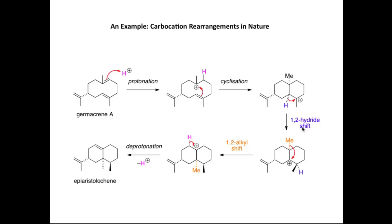Next, a 1,2-hydride shift occurs. The hydrogen on the neighbouring carbon moves to the electron-deficient carbon, taking its electron density with it. We form a new carbon-hydrogen bond, and the positive charge moves from one carbon to the neighbouring carbon, giving another tertiary carbocation. Then a similar process occurs with the adjacent methyl group: electron density from the carbon-carbon bond is donated towards the positive charge, we form a new carbon-carbon bond, and the positive charge moves to another position, forming yet another tertiary carbocation.